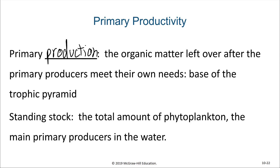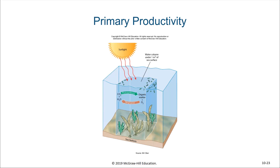Another term to be aware of is the standing stock — the total amount of phytoplankton, the main primary producers in the water. We use the standing stock to make measurements about the photosynthesis happening, as well as the consumption of photosynthetic product necessary for those primary producers to still be present. In a marine system, primary productivity is generally measured as a one-meter water column, and all the photosynthesis happening in that column minus the respiration by those primary producers gives the primary productivity of that column.